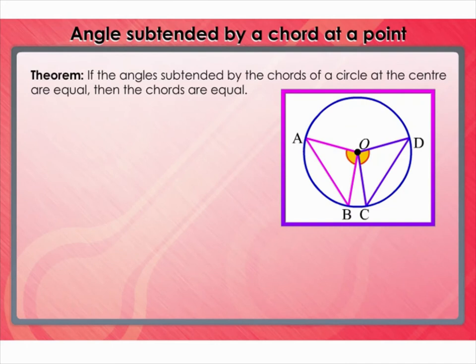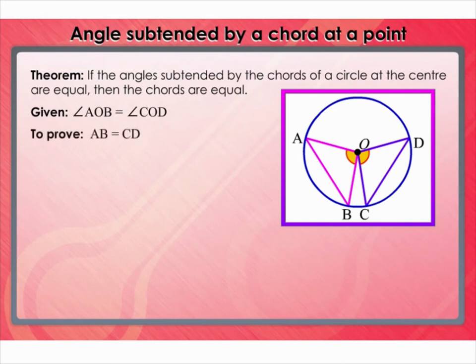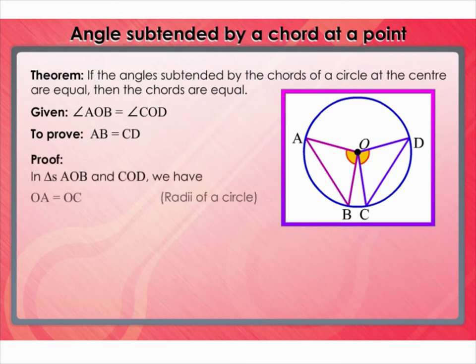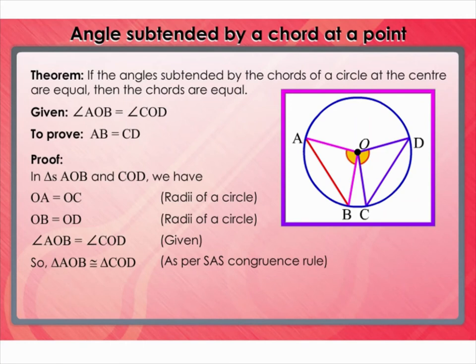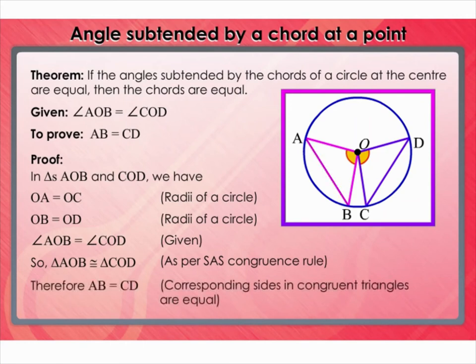Now let's prove the converse: if the angles subtended by the chords of a circle at the center are equal, then the chords are equal. Given angle AOB equals angle COD, we need to prove AB equals CD. In triangles AOB and COD: OA equals OC and OB equals OD since both are radii, and angle AOB equals angle COD is given. By SAS congruence rule, triangle AOB is congruent to triangle COD. Therefore, by corresponding sides of congruent triangles, AB equals CD.